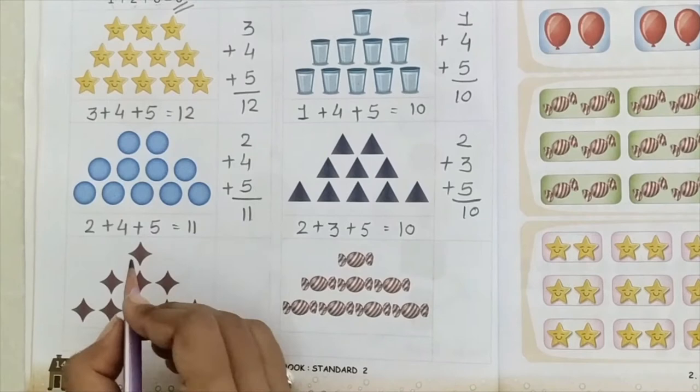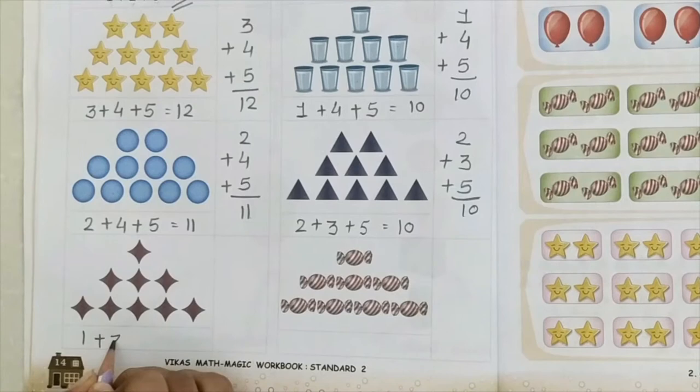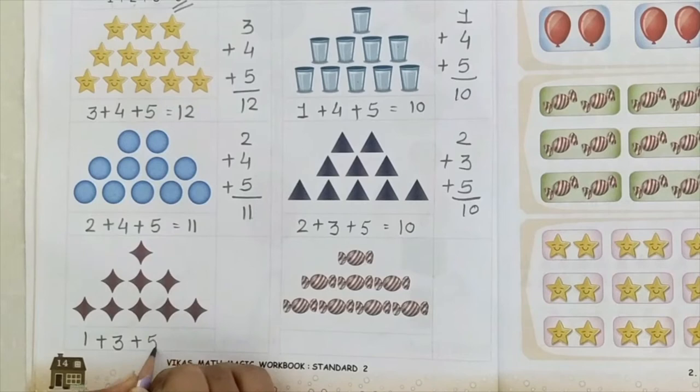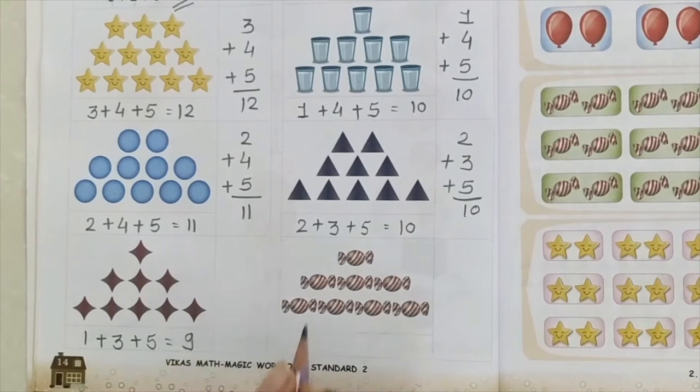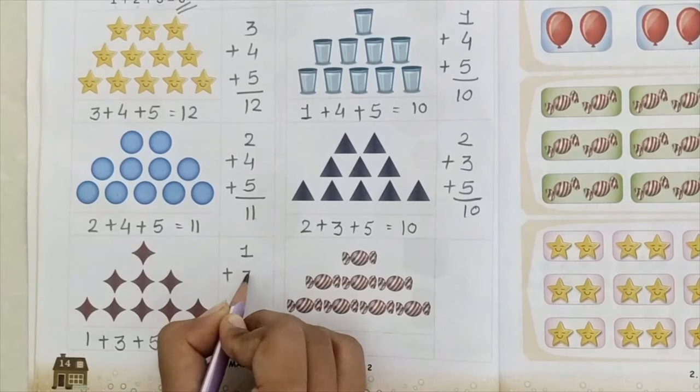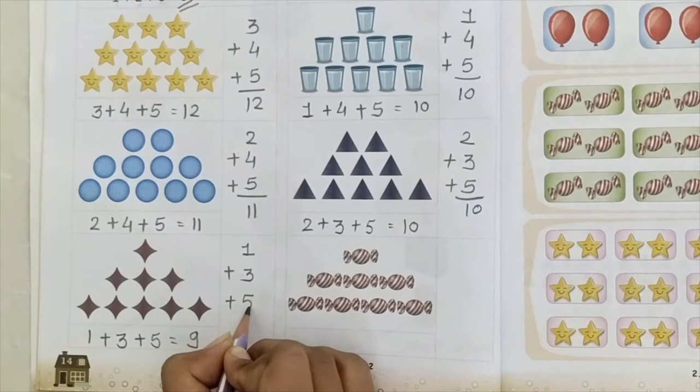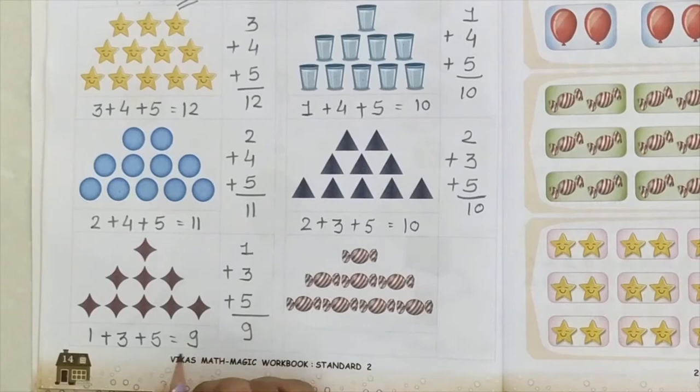Star diya hai. Horizontally — 1 likhenge. Plus 1, 2, 3 — 3 likhenge. Plus 1, 2, 3, 4, 5 — 5 likhenge. 1 plus 3, 4. 4 plus 5, 9. Vertically — 1 likhenge. Plus 1, 2, 3 — 3 likhenge. Plus 1, 2, 3, 4, 5 — 5 likhenge. 1 plus 3, 4. 4 plus 5, 9. Answer same.